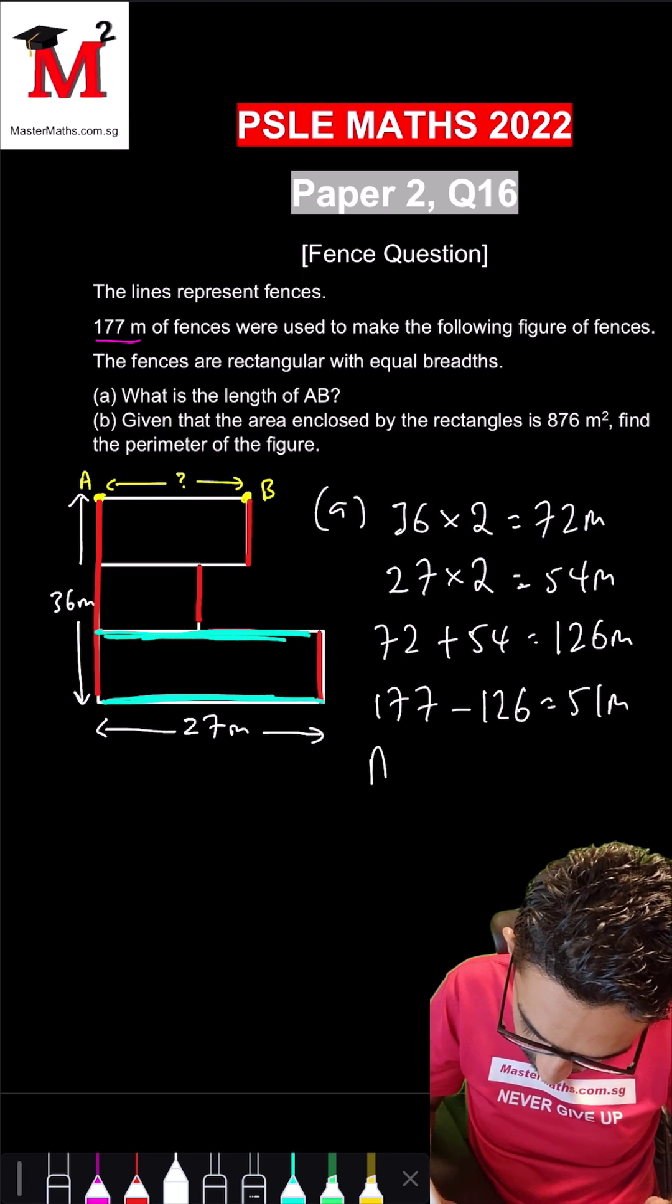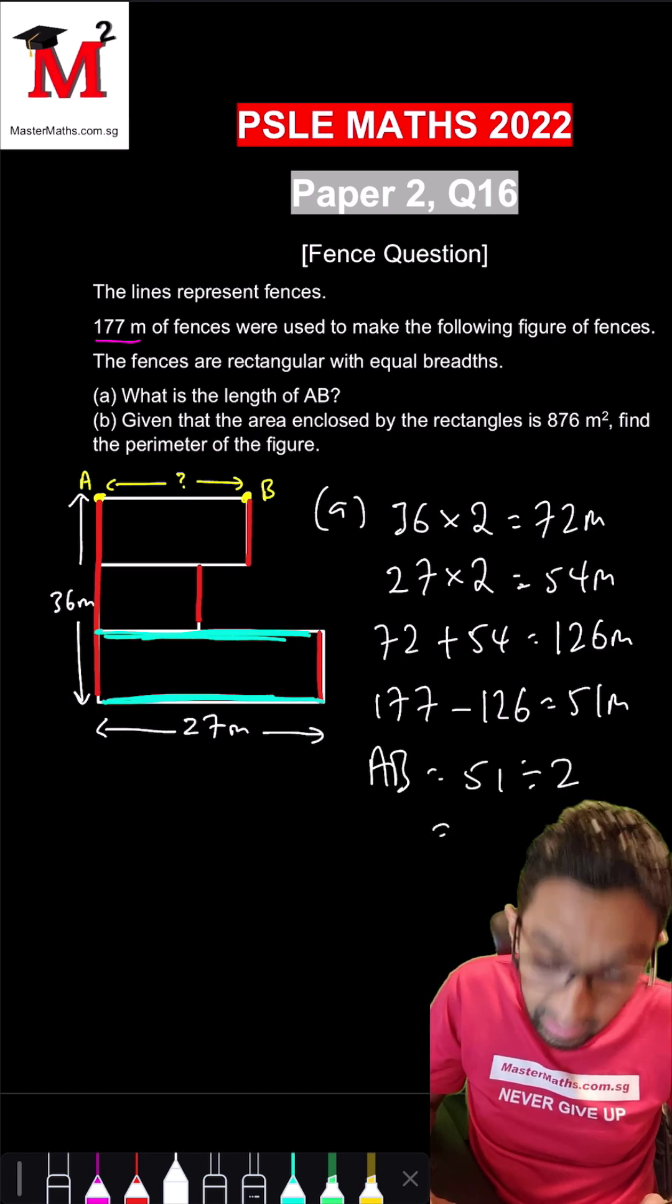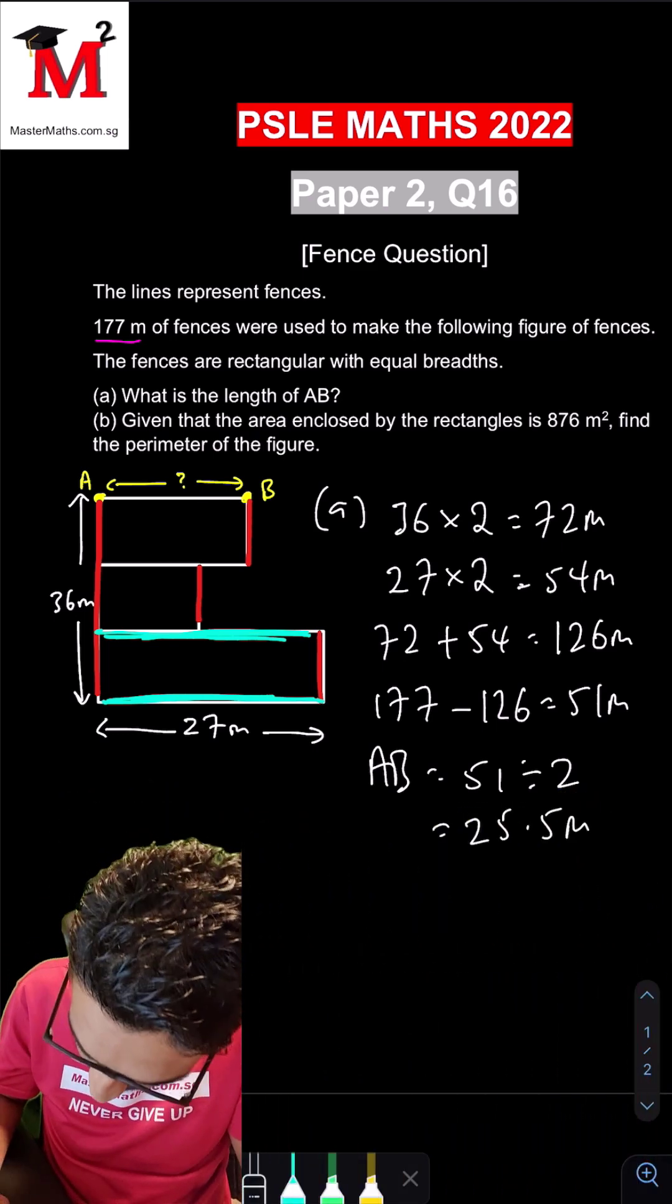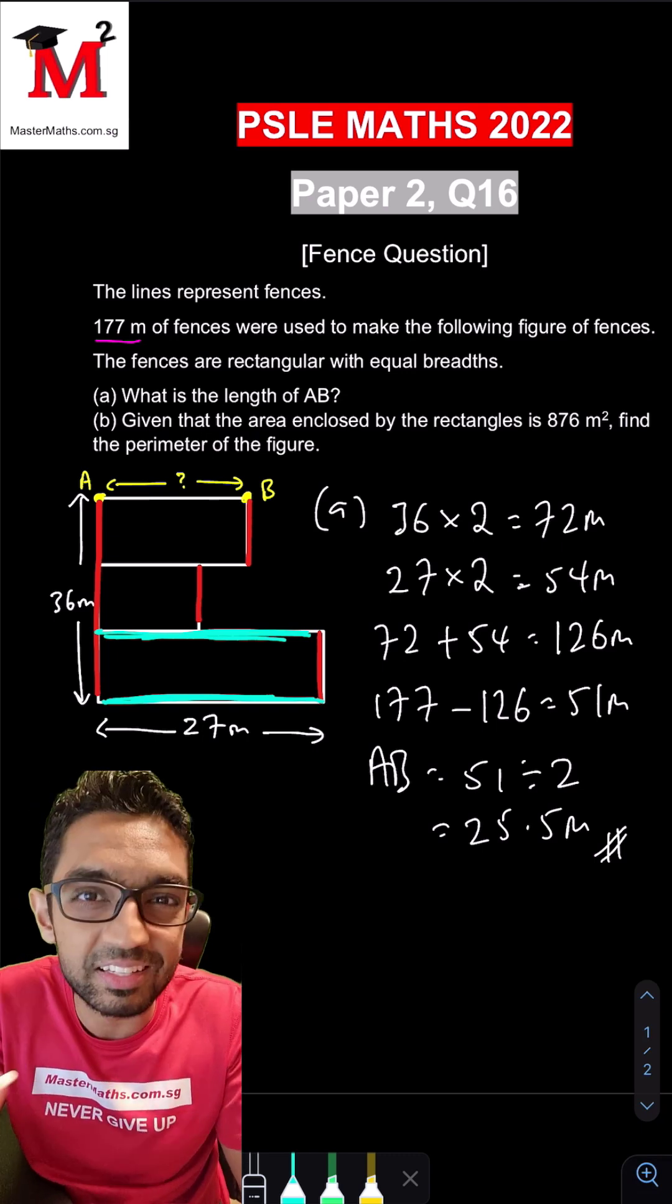So to find AB, we will just take 51, divide this by 2, we will get an answer of 25.5 meters. Final answer for part A, 25.5 meters.